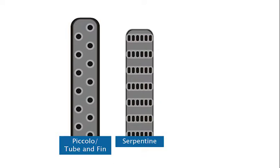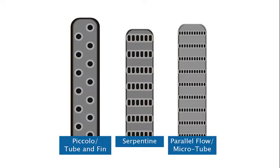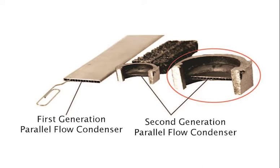Typically there are three different designs of condensers. Older model vehicles carry either Serpentine, which is the most popular for older model vehicles, and Piccolo type condensers. The Serpentine design has one long tube folded back and forth with a single path for the refrigerant to flow through. The newer parallel flow design has many tubes stacked horizontally connected to a vertical tube at each end. Although parallel flow condensers increase efficiency, it makes them impossible to flush.